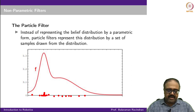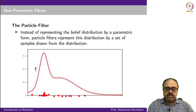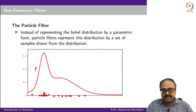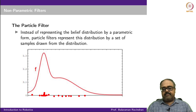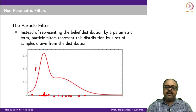For each value of x, the y-axis represents the particular density. Sampling according to this distribution means wherever the density is high, we get many samples, and wherever the density is low, we get fewer samples. So instead of representing the whole thing as a functional form, we just store a set of points x that indirectly represent the distribution.